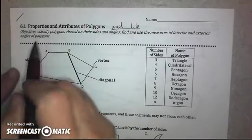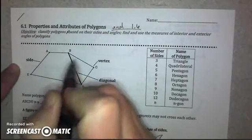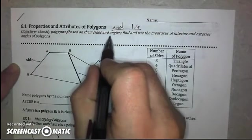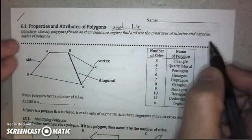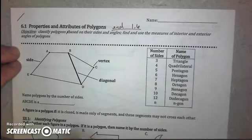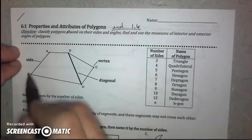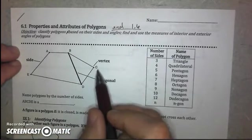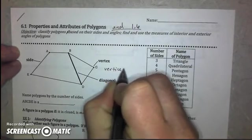So we will be looking today at classifying polygons based on their sides and angles, and we will also be finding and using measures of interior and exterior angles of polygons. A polygon has some key components I want us to understand. The segments make up sides of a polygon and where two segments intersect, those create a vertex. And the plural of vertex is vertices.